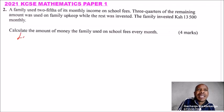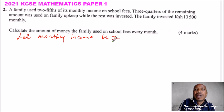We can start by saying let monthly income be x. Once you say that, then since they were using two-fifths of the total amount on school fees, you say 2/5 of x is for school fees.